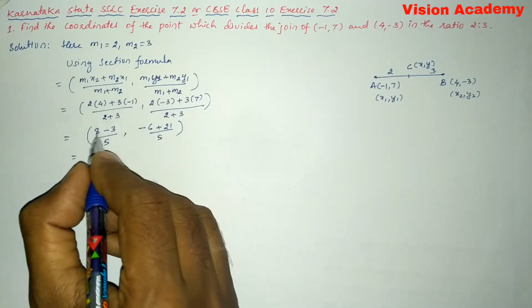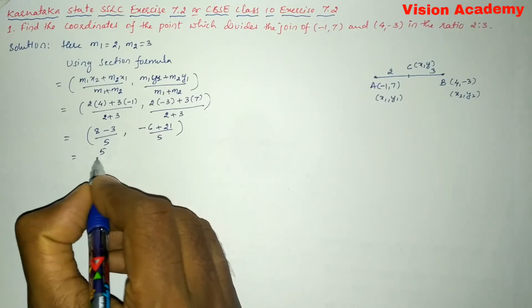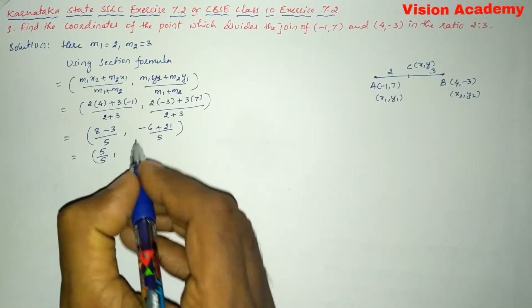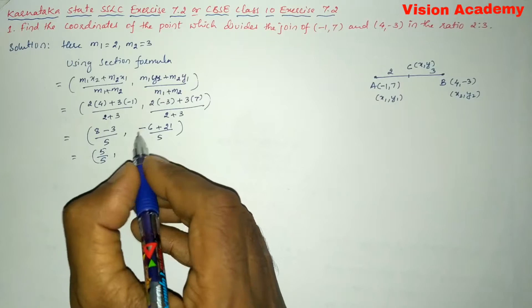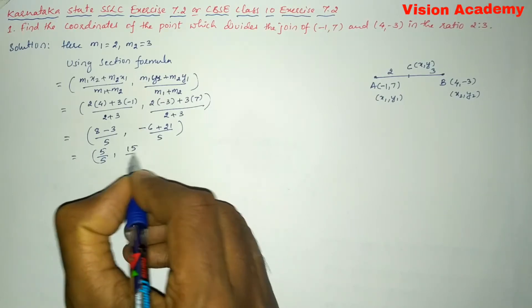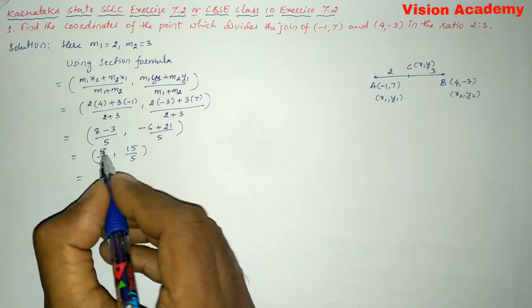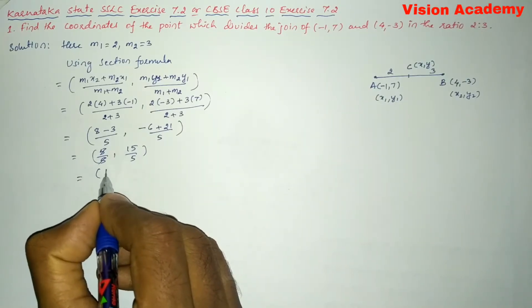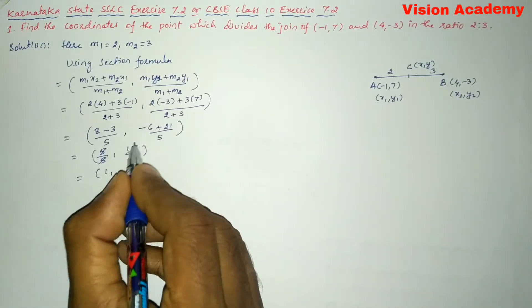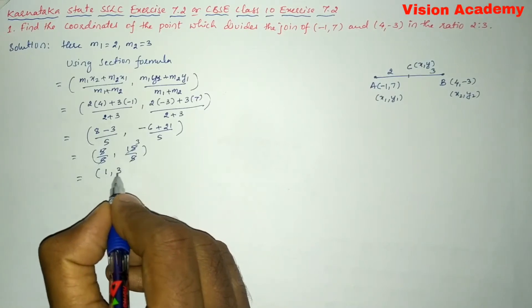Now, here 8-3 gives us 5 divided by 5, and 21-6 gives us 15 divided by 5. So, here 5 divided by 5 is 1, and 15 divided by 5 is 3. So we get 1, 3.